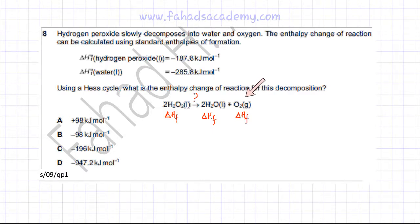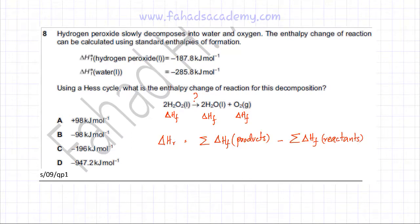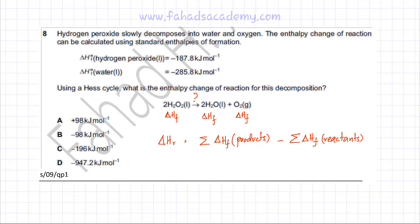The enthalpy of formation is defined as the energy change when one mole of a substance is formed from its constituent elements. Since you cannot form an element from itself, the enthalpy of formation for any element is zero. We have the enthalpy of formation for both the reactants and products, so we can use the formula: ΔH_rxn = Σ ΔHf(products) − Σ ΔHf(reactants).